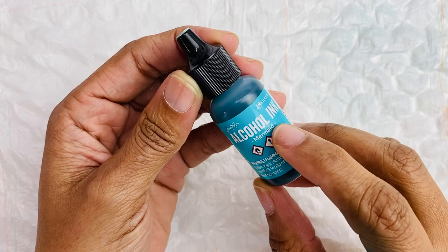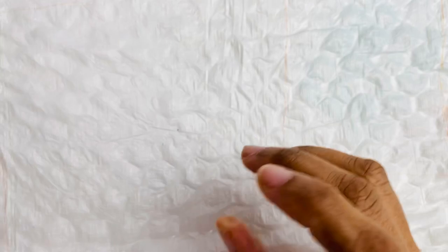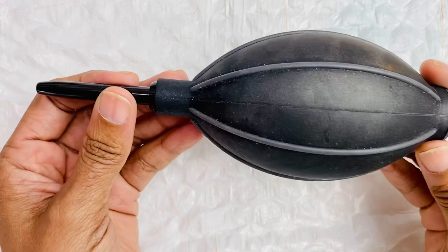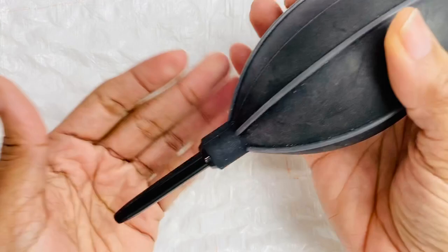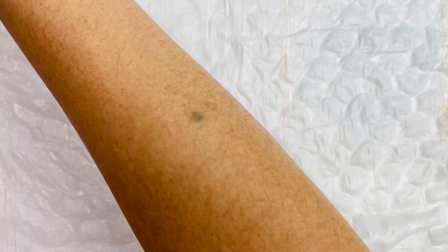Of course, you'll need alcohol inks to swatch. For today's demo, I'm going to use Tim Holtz alcohol ink in the mermaid color and the other thing that you'll need is a blower. I'll show you how you use this handy Tim Holtz blower to move the alcohol ink around on the piece of paper to create the swatch.